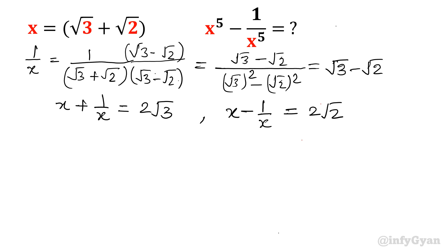Simply add both equations: x plus 1 over x — root 2 and minus root 2 cancel out, so 2 root 3. If we subtract, root 3 cancels out and 2 root 2 comes out as the answer.